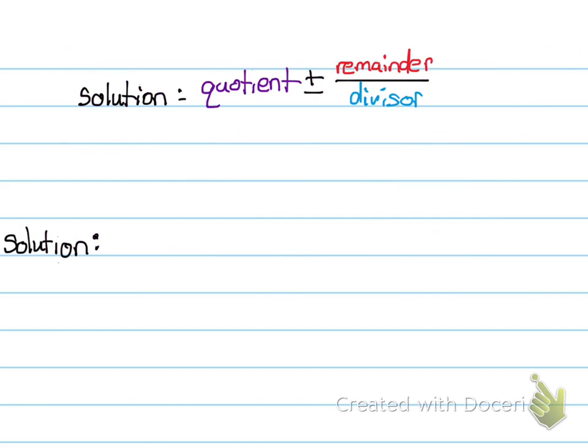So when you write out your final solution, your quotient is going to be x cubed plus 4x squared minus 8x minus 1. And since you don't have remainder, you don't put anything over the divisor. So that's it!